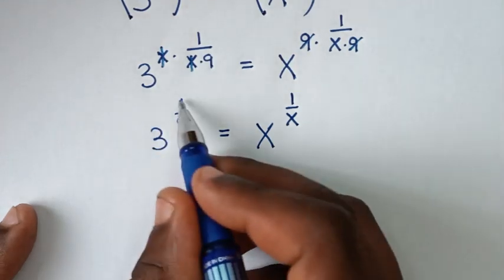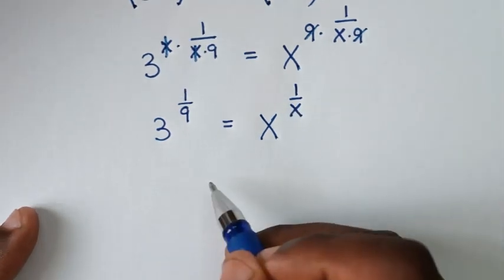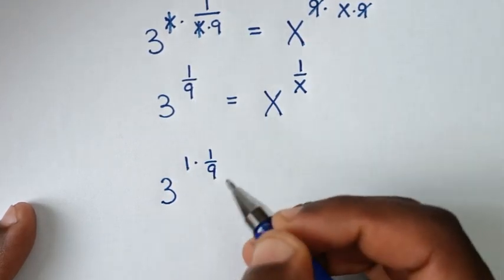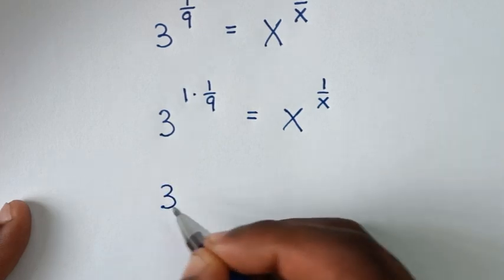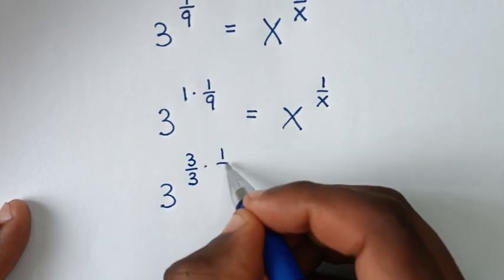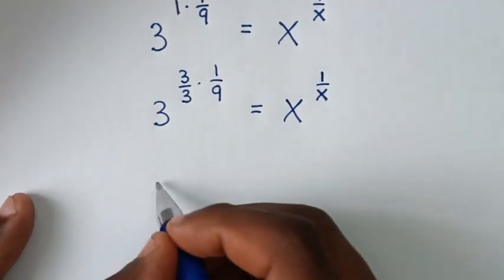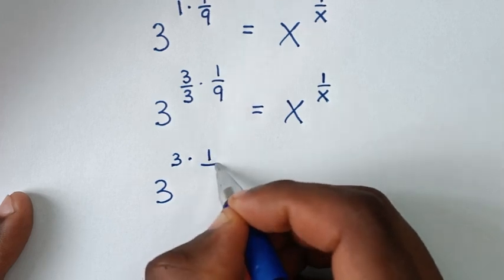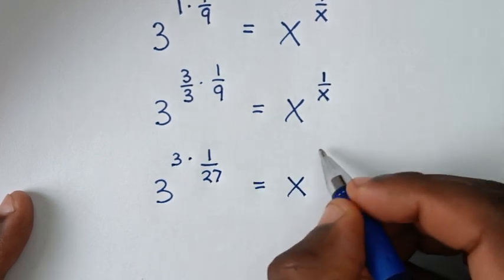In the next step, we make the left side look like the right side x^(1/x) — same base with same denominator in the power. From this side, 3 to the power of 1/9 is the same as 1 times 1/9. Then 1 here is the same as 3/3, so it becomes 3 to the power of 3 times 1 over (3 times 9). Since 3 times 9 is 27, it equals x to the power of 1/x.